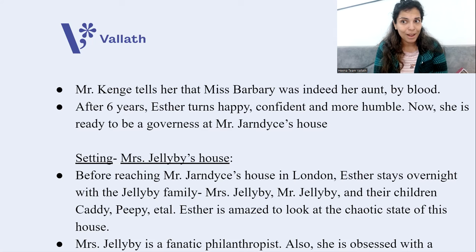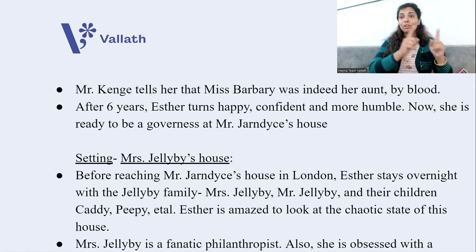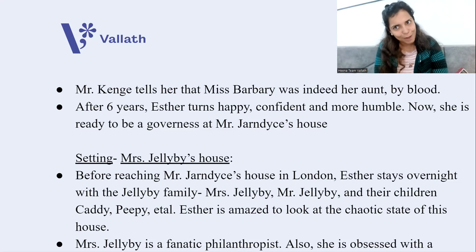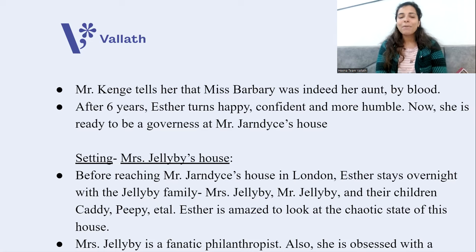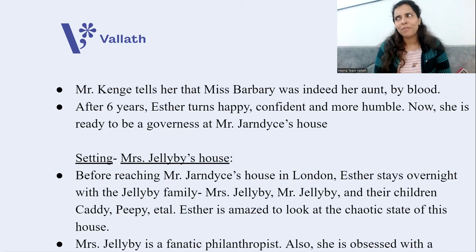Esther is now ready to become a governess at Mr. Jarndyce's house — after her education she can work there as a helper. But before reaching Mr. Jarndyce's house in London, she stays overnight with the Jellyby family, which consists of Mrs. Jellyby, Mr. Jellyby, and their children named Caddy, Peepy, and others. Esther is amazed to see the chaotic and messy state of the house.